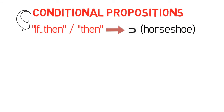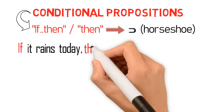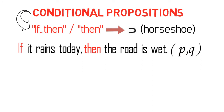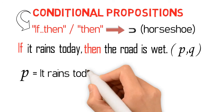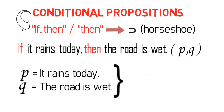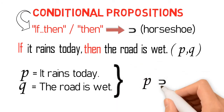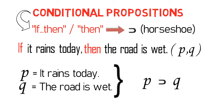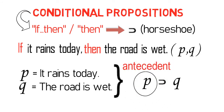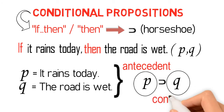Consider this example: 'If it rains today, then the road is wet' — symbolized as P then Q. If we let P stand for 'it rains today' and Q for 'the road is wet,' then this example is symbolized as P then Q. Please note that the proposition that precedes the connective horseshoe is called the antecedent, and the proposition that comes after it is called the consequent.